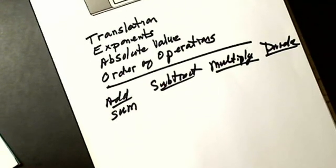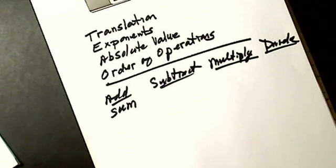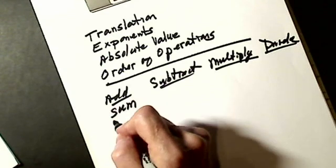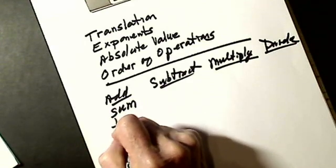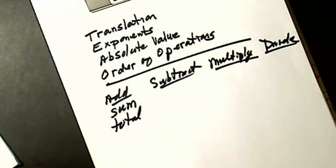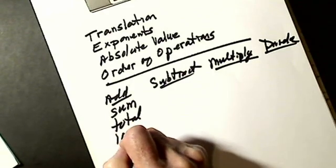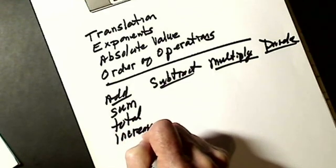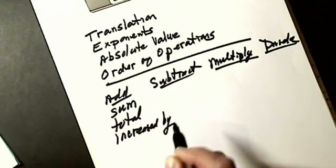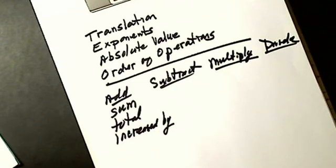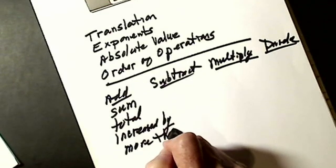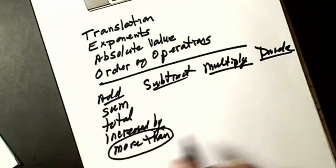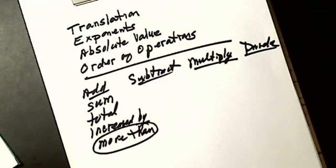Another word for add is 'total' — find the total. So if you saw 'total,' you would know to add. Then we've got 'increased by.' And then we have 'more than.' I'm going to circle 'more than' because when we get done with our list, that's the one people get wrong.